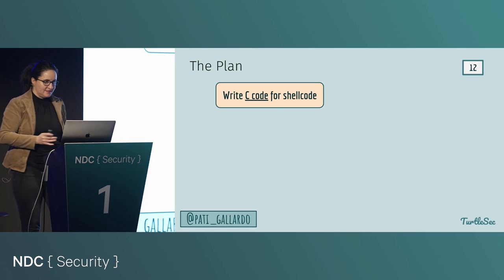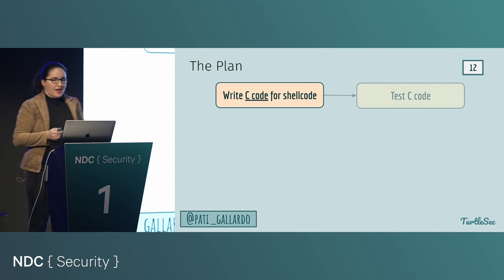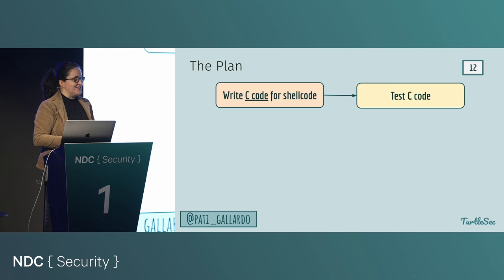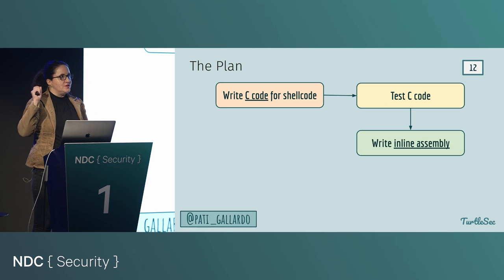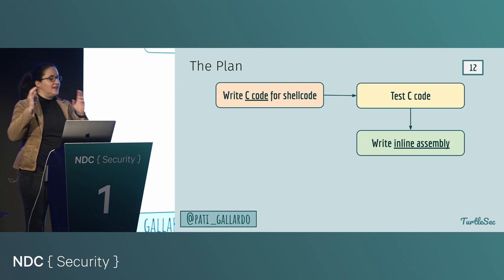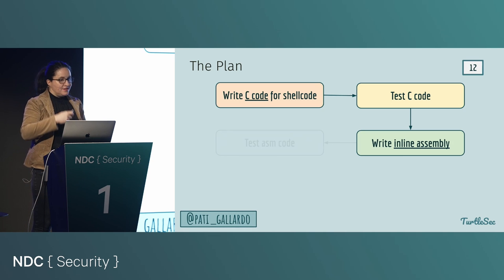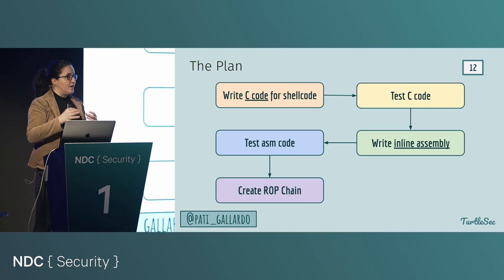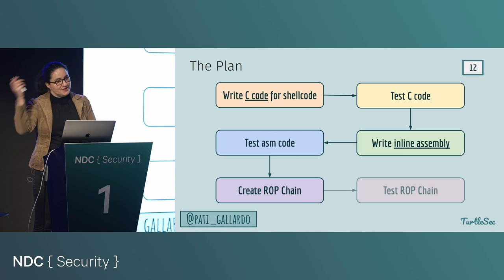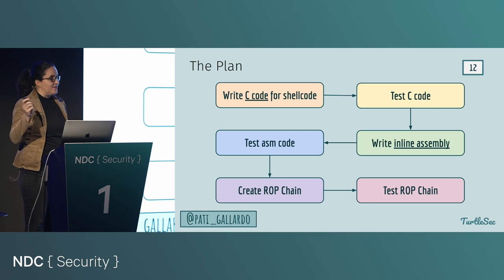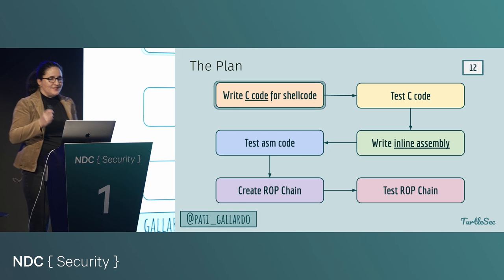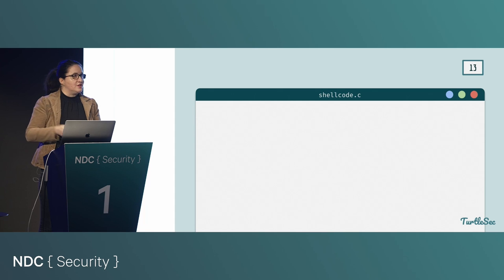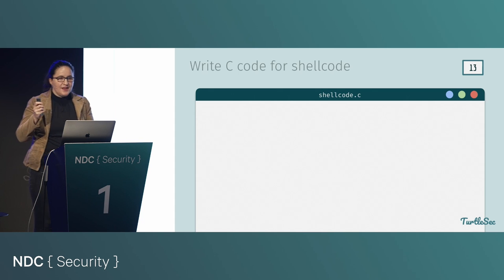The plan for the entire presentation: we will start by writing the C code for the shellcode, then test it to make sure it does what we intended. Then we're going to write inline assembly that does what we want and test that again. Then we will create a ROP chain that does the same thing, and test that it still works. That is the entire plan for the entire hour.